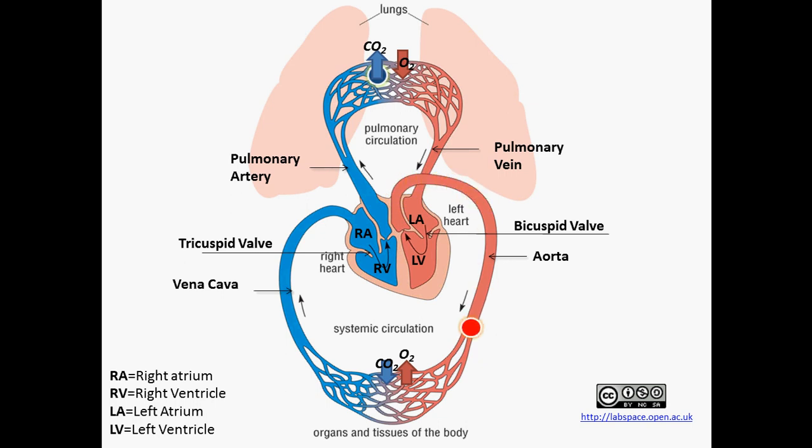From the aorta, it will then branch off into all the different arteries that will deliver the oxygenated blood to all the organs and tissues of your body. Once it arrives at the organs and tissues, your tissues are going to pick up the oxygen that they need, give back the carbon dioxide, and this full cycle will start all over again.